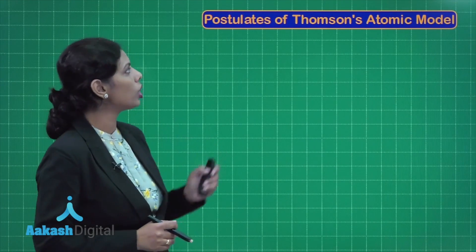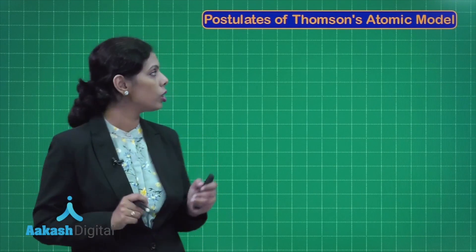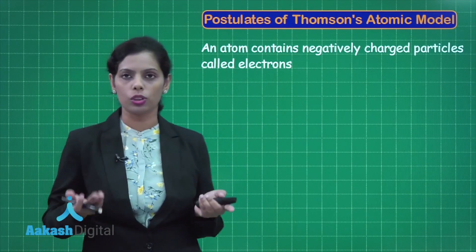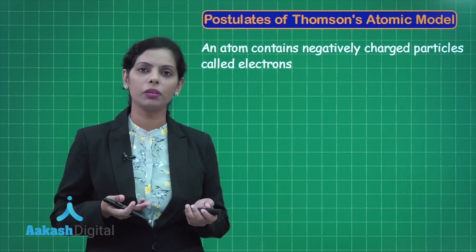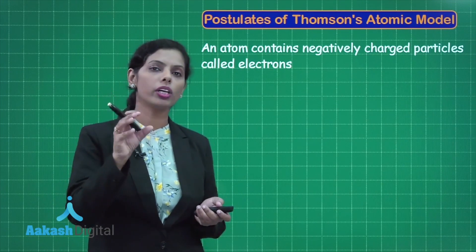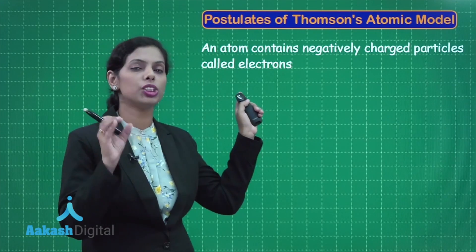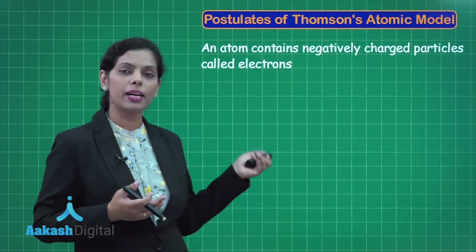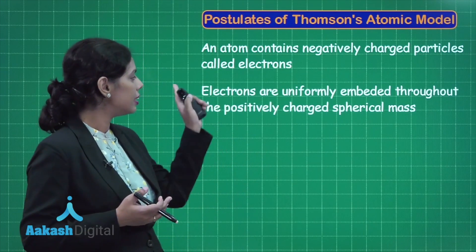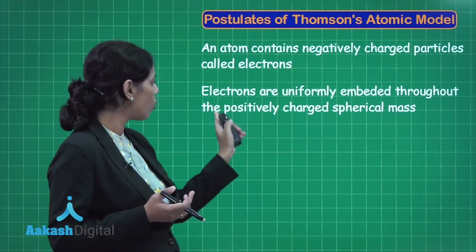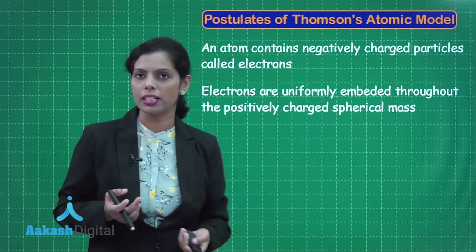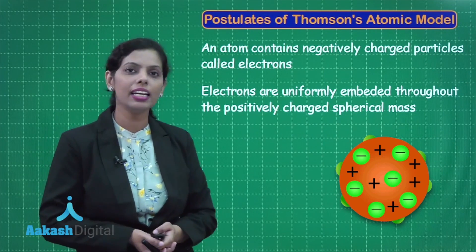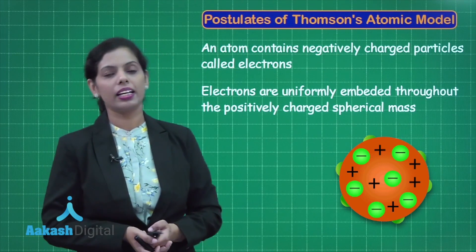Let us see the few postulates of Thomson's atomic model. The first one: an atom contains negatively charged particles called electrons. Because electrons were discovered by Thomson, he included them here. As per him, the negatively charged particles are present in the atom, and electrons are uniformly embedded throughout the positively charged spherical mass. The spherical positive mass is there and electrons are embedded in it.